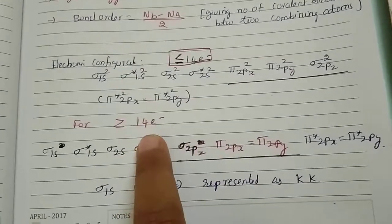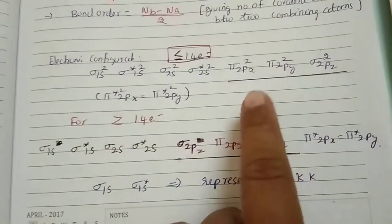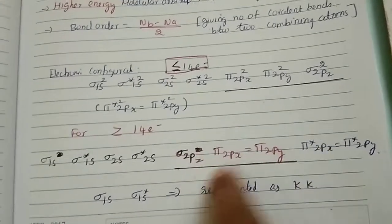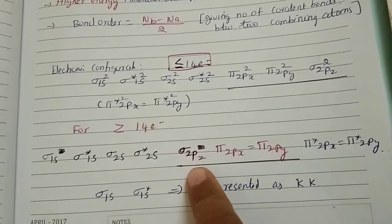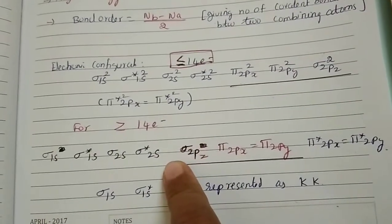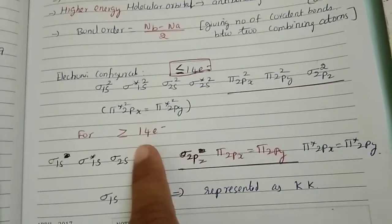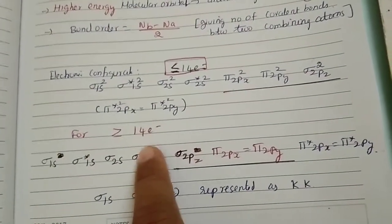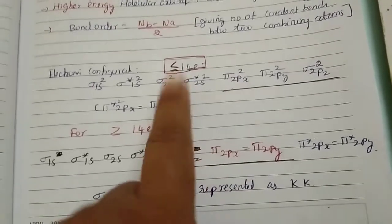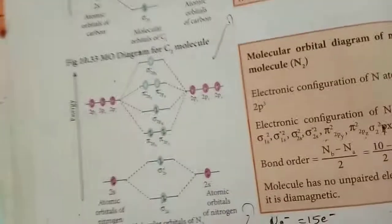Only the position of σ2pz varies between the two configurations. For atoms with 14 or fewer electrons, σ2pz comes after π2px and π2py. For atoms with more than 14 electrons, σ2pz comes before π2px and π2py. You have to memorize this. Now let's go to an example.